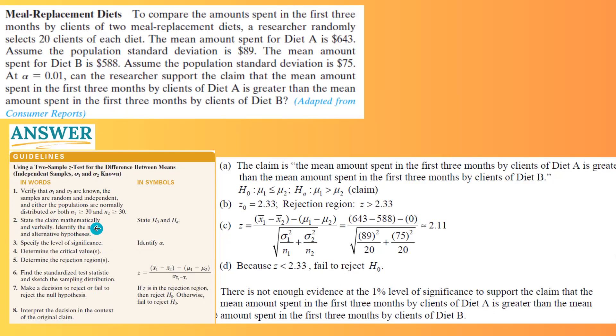State the claim mathematically. Look for the claim. The researcher says that the mean amount spent in the first three months by clients of diet A is greater than. This is the key word for you: greater than. It means that the alternative hypothesis is given to everybody. So the claim says mu1 is more than mu2. Its complement is mu1 less than or equal to mu2.